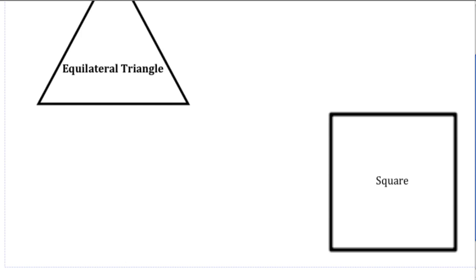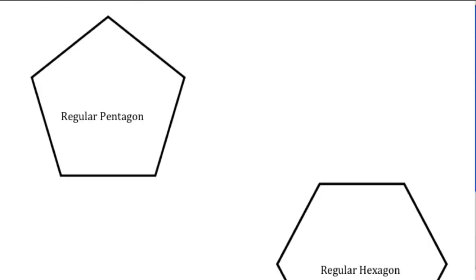We also want to talk about regular polygons when it comes to a square. A square has all side lengths the same length and all angles are 90 degrees — they're all the same measurement. Then when we get into different shapes like pentagons, we're going to talk about regular pentagons because all side lengths would be the same measurement and all angles would be the same size.